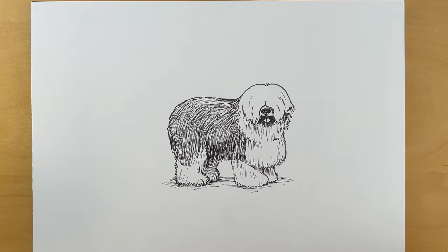To draw this Old English Sheepdog you're going to need a pencil, an eraser, and a black pen. Let's get started.